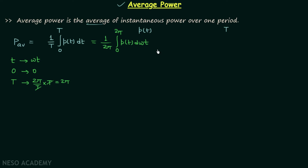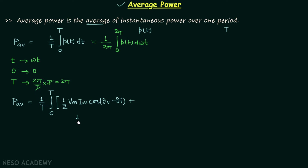Now we will put P(t) equal to half VmIm cos(θv − θi) plus half VmIm cos(2ωt + θv + θi). So we will have the average power equal to 1 over T, integration from 0 to T, of the quantity: half VmIm cos(θv − θi) plus half VmIm cos(2ωt + θv + θi), integrated with respect to time t. In the next step we will integrate each term separately.